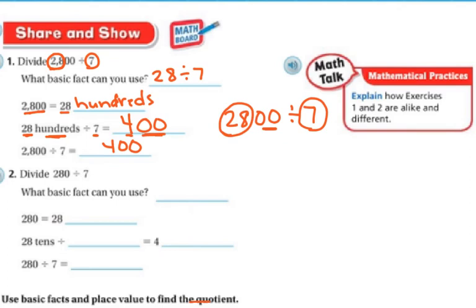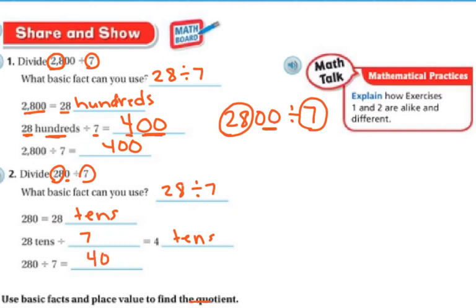Divide 280 by 7. My basic fact is the same: 28 divided by 7. But now I only have one zero because I'm working with tens, not hundreds. So 28 tens divided by 7 is 4 tens, and 4 tens is 40. You can think of these as reverse multiplication — if you've got four dimes or four tens, it's 40.